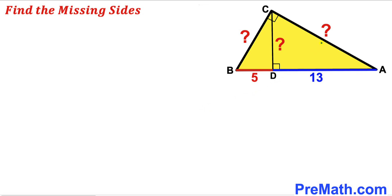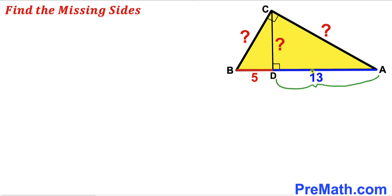Welcome to pre-math. In this video we have got a right triangle ABC along with a perpendicular CD, such that the segment BD is 5 units and segment AD is 13 units. Our task is to calculate the missing side lengths BC, perpendicular CD, and side length AC.